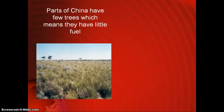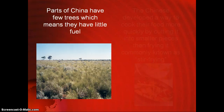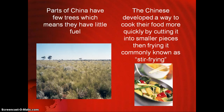Another example comes from China. In parts of China, it is mostly dry grassland, which means they have very little fuel for burning, heating, and cooking. They adapted in a very delicious way — they developed a new way of cooking by cutting food into smaller pieces and stir-frying. They use a special shaped pan that evenly distributes heat, and by cutting food smaller, the pieces are easier and faster to cook.